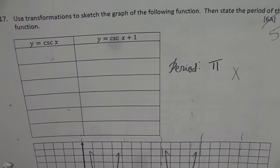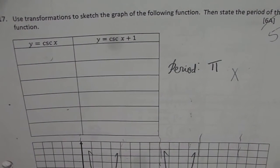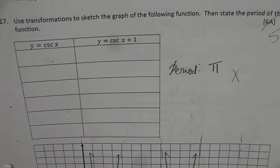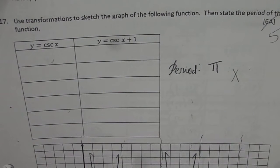And then we have the last page, I think, hopefully. It's still not the last page. It's a pretty long paper. So a transformation to sketch the graph of the function, which is cosecant x and cosecant x plus 1.